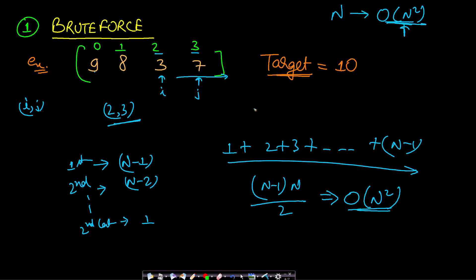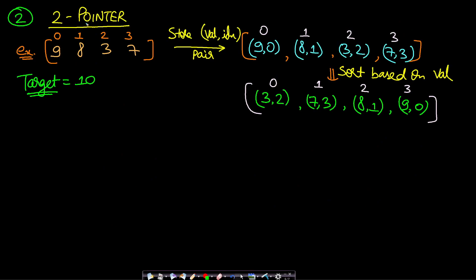Now let's look at a better solution using the two pointer technique. The two pointer technique requires the array to be sorted so we can decide which pointer to move. We take a left pointer and a right pointer. However, since we need to return index pairs, we cannot blindly sort the values — we must also keep track of the corresponding indices.